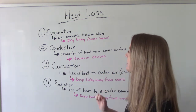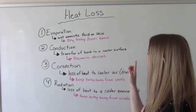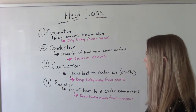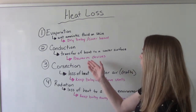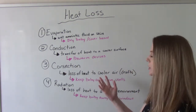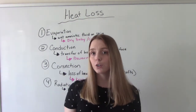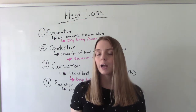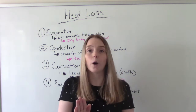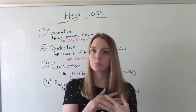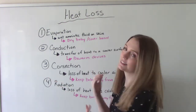The second kind is something called conduction — the transfer of heat from a warmer surface to a cooler surface. An example of what we can do to prevent this would be to pre-warm devices. We can do this on infants and children, but also on adults as well. Maybe you've gone to a checkup and before the doctor or nurse puts the stethoscope on you, they warm it up or warm up their hands before they touch you. That is because they don't want you to lose heat via conduction.